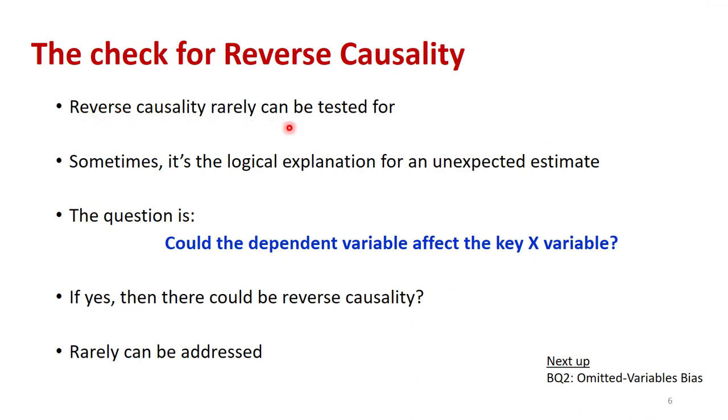Unfortunately, reverse causality can rarely be tested for. But sometimes, as in our prior example, it's the logical explanation for some estimate that's contrary to what you think it should be, or the opposite sign of what you think it should be. The question comes down to, could the dependent variable affect the key X variable? If it could, either positively or negatively, then there could be reverse causality. Sometimes there's a fix, but it's rare, rarely can you actually address this. It's something that needs to be acknowledged in any study that there's a possibility there's some reverse causality here that could not be addressed. Next up is big question two on omitted variables bias in the next video.